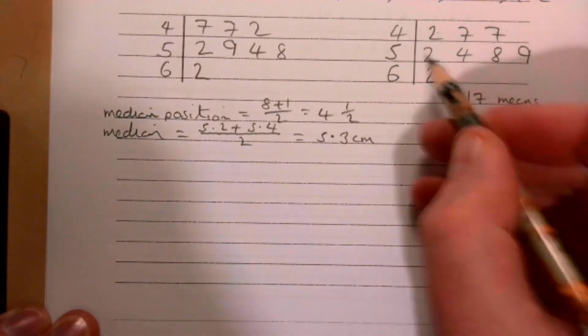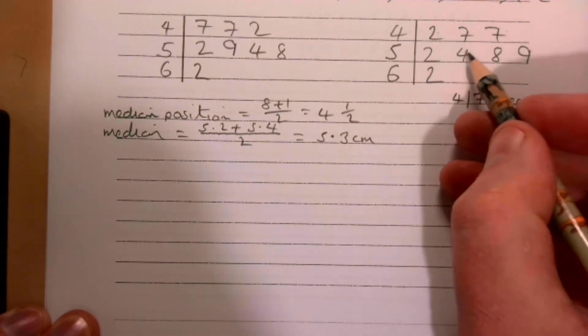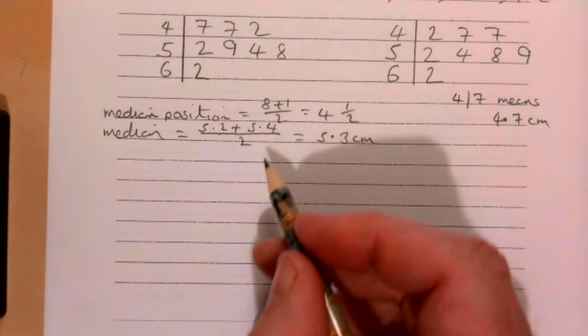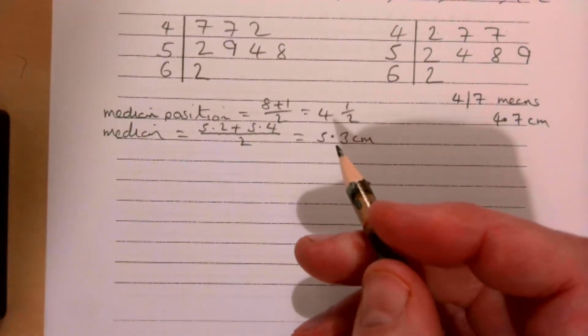Obviously there's a list of eight things and we're looking halfway between the fourth and fifth, but I'm just trying to establish these. When it gets a bit more complicated, it's nicer to have these formulas so we know what we're doing.